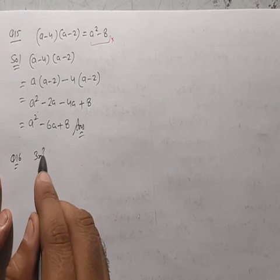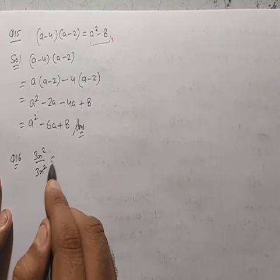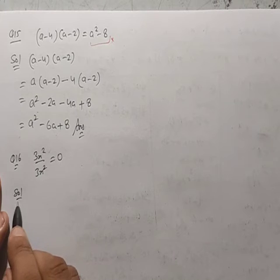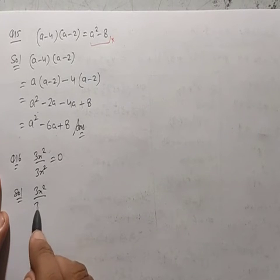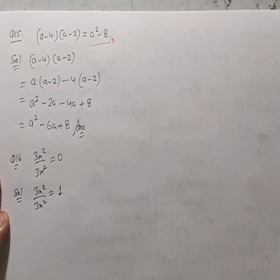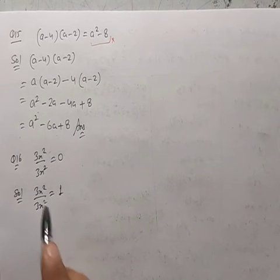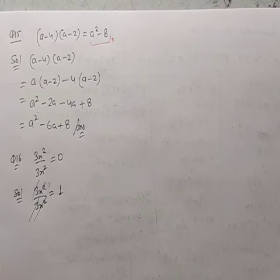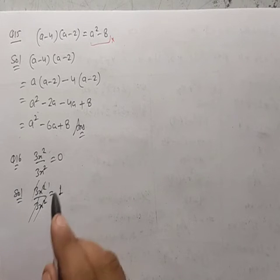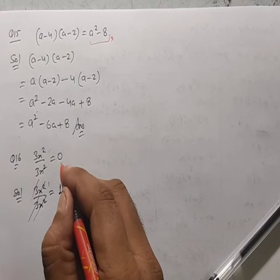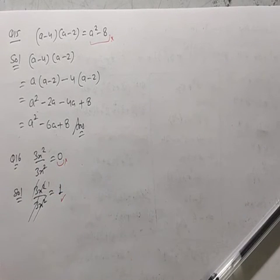Question 16: 3x²/3x² = 0 is given. Solution: 3x²/3x² = 1, because 3 cancels with 3 and x² cancels with x². The correct answer is 1, not 0.